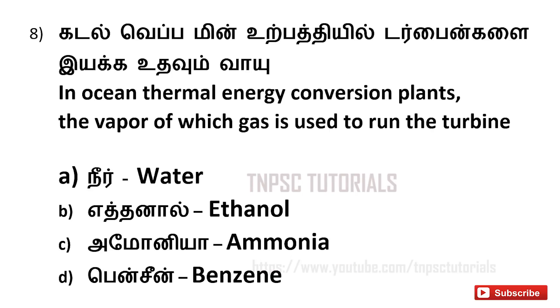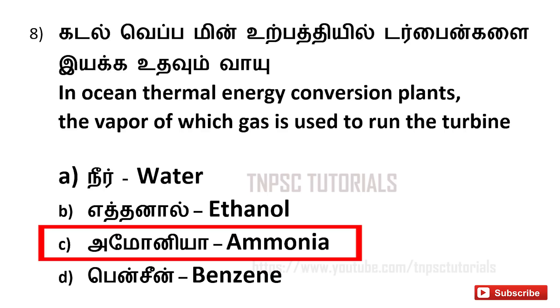Eighth one, in Ocean Thermal Energy Conversion plants, the vapour of which gas is used to run the turbine? A. Water, B. Ethanol, C. Ammonia, D. Benzene. And the answer is C, Ammonia.